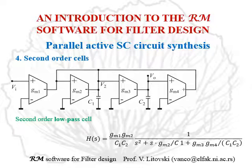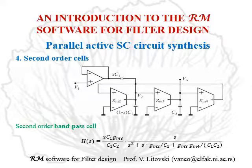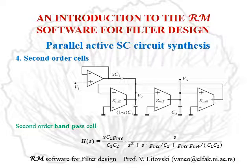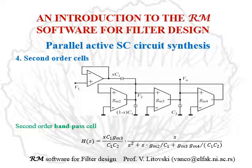Now, for the practical realization of cells: first, we have a low-pass cell which has infinite input impedance, so that it does not need the isolating amplifier. Here is the band-pass cell where the capacitor XC1 is in the series branch at the input, so the isolating amplifier is necessary in order to avoid this cell loading the preceding cell.